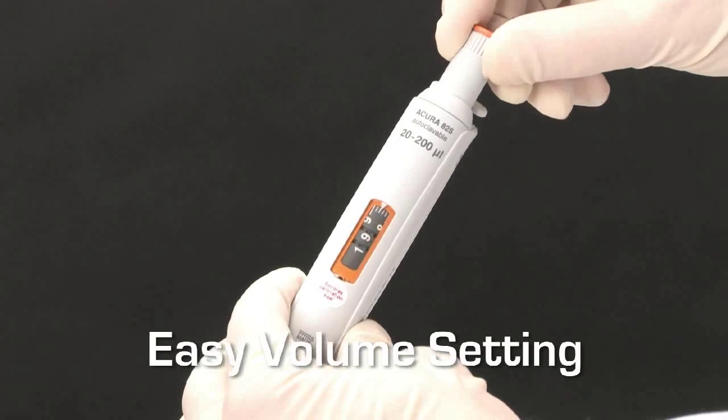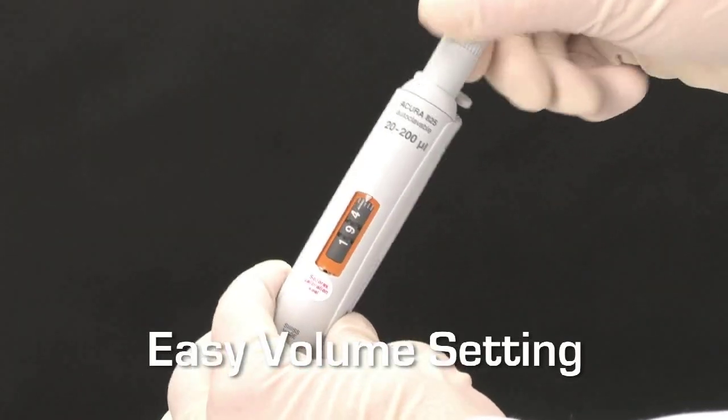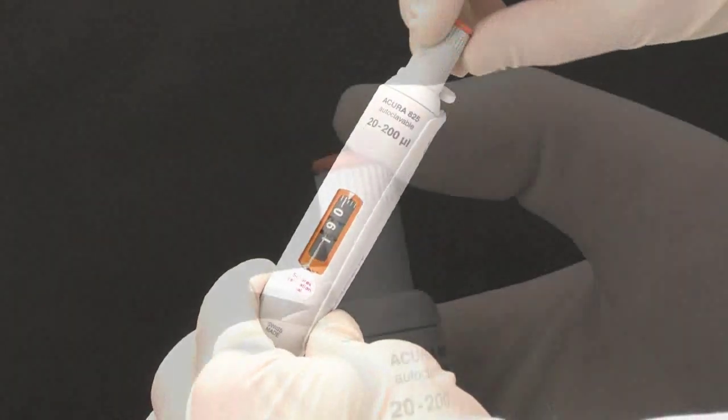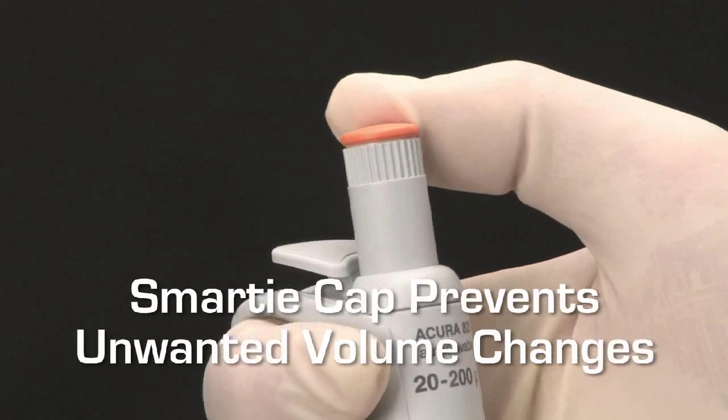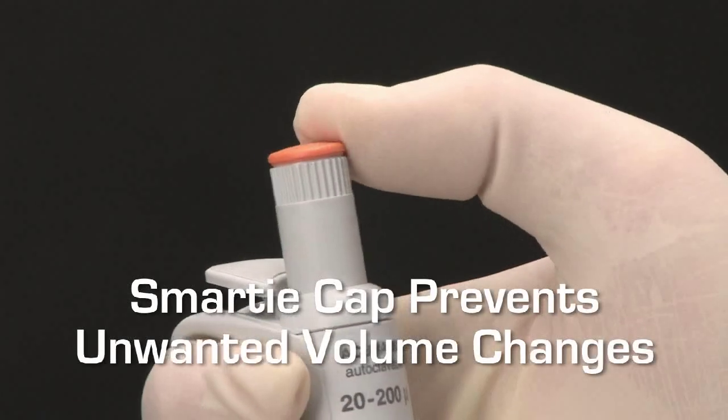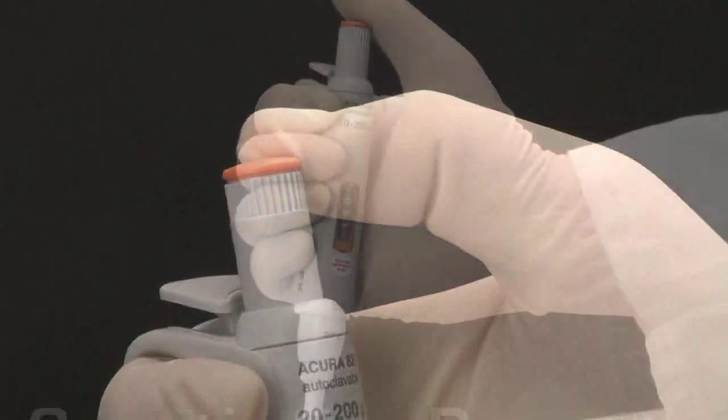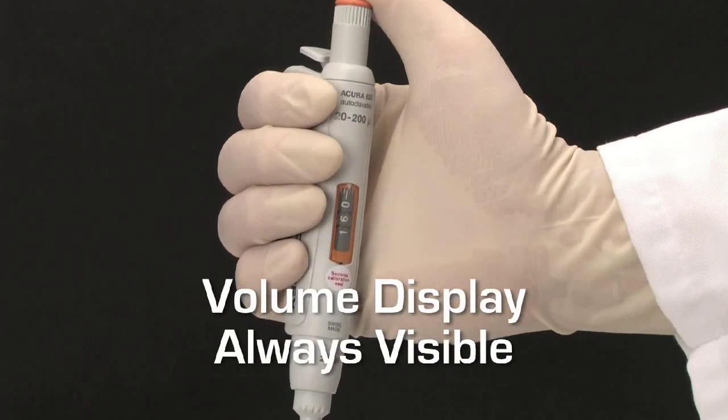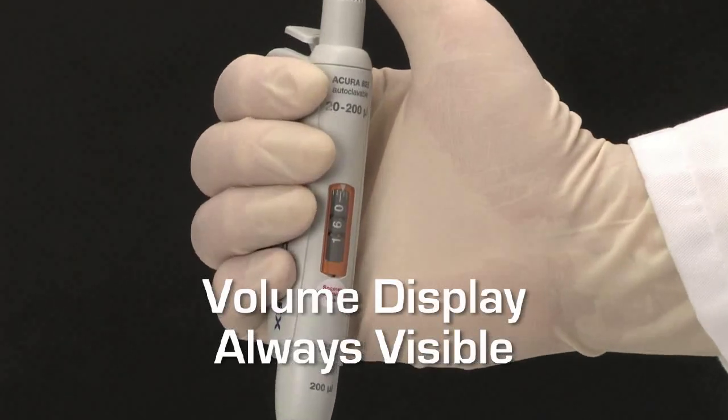Setting the exact volume to be dispensed with all Acura Manual Pipettes is simple and precise. Once selected, the free rotating color-coded cap prevents any unwanted volume changes from occurring during use. For positive verification, the contrasted volume display is visible anytime.